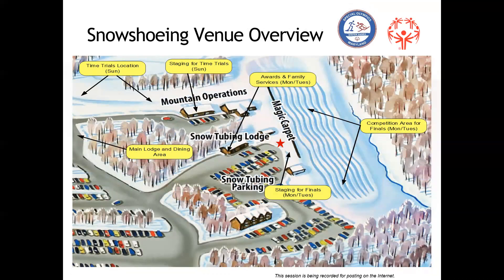For the snowshoeing venue overview, nothing has really changed. The only thing changing is we're bringing back our 20-by-40 tent — we couldn't put it up last year due to crazy winds. The tent will be between the tubing lodge and the competition area, with pre-staging for competition and awards. The tubing lodge will now be purely space for athletes and programs to sit, relax, stay warm, and access the snack bar.